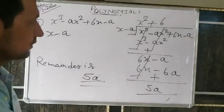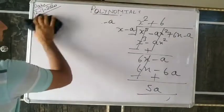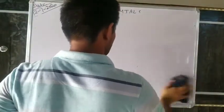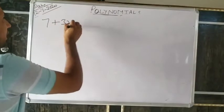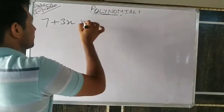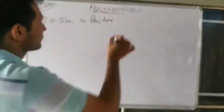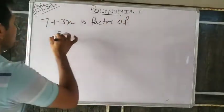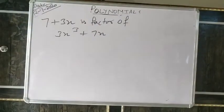Understand or not? Very good. Now the last question — Question 3: check whether 7+3x is a factor of 3x³+7x. What is the meaning of factor? If I say 2 is a factor of 12, what does that mean?